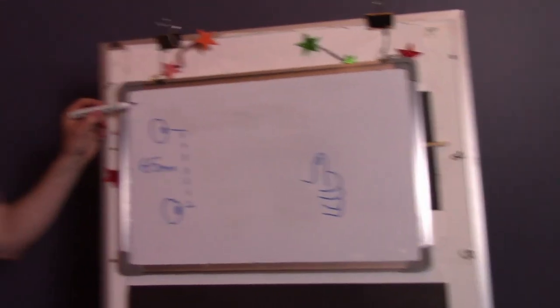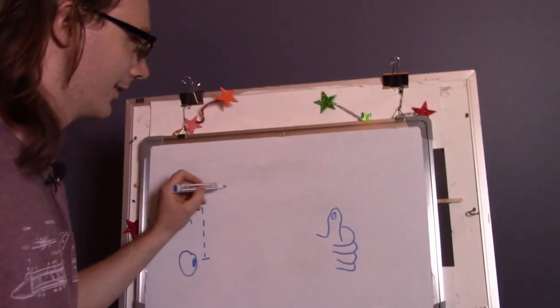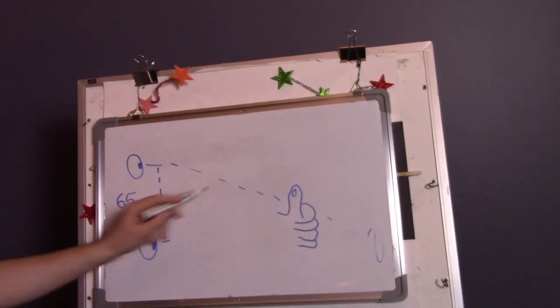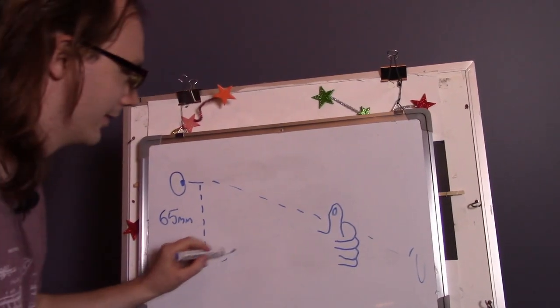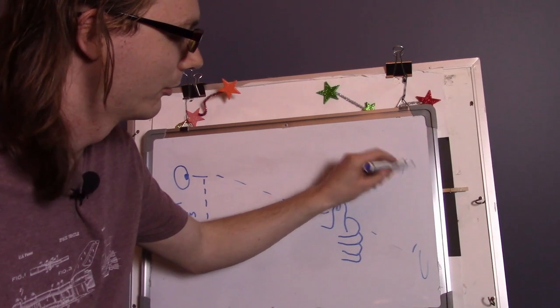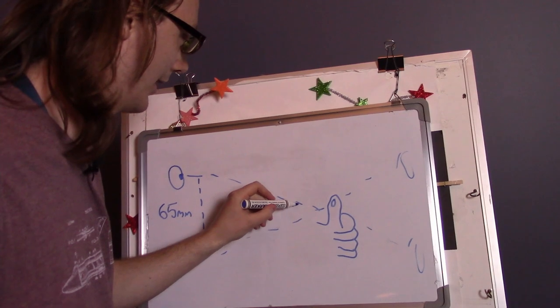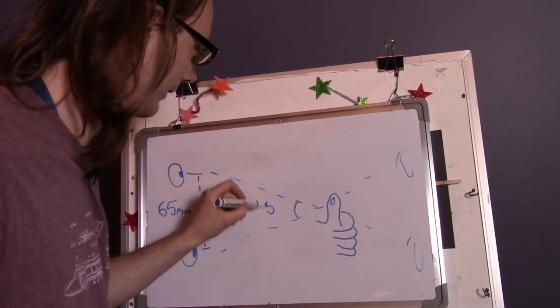And when I'm looking with just my left eye it appears as though it's over here. And when I'm looking with just my right eye it appears as though my thumb is somewhere over here. So that apparent motion is the parallax angle that we measured here which is 5 degrees.